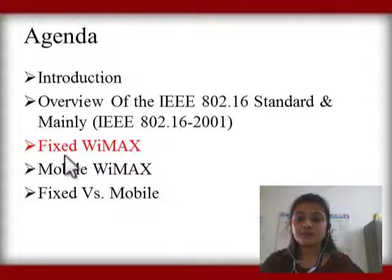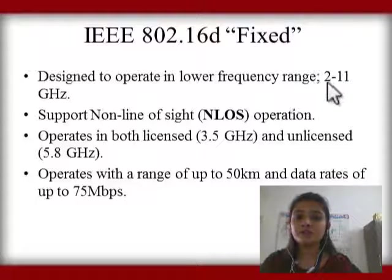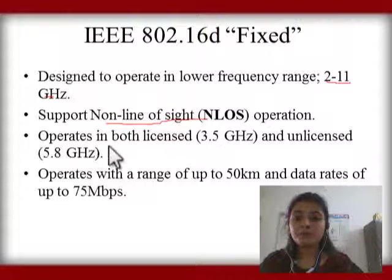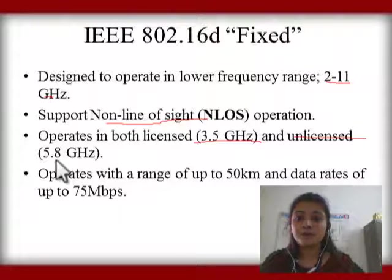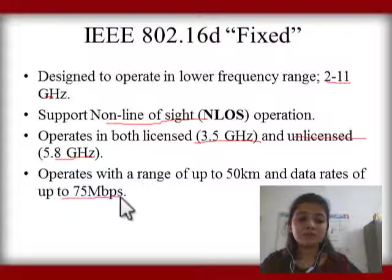The first type is Fixed WiMAX, which is 802.16d. Fixed WiMAX has a lower frequency range of 2 to 11 GHz. It supports non-line of sight. It operates in both licensed spectrum: 3.5 GHz, and home license at 5.8 GHz. It operates with a range of 50 km and a data rate of up to 75 Mbps.